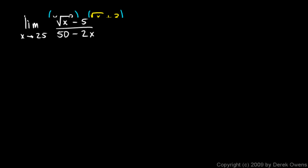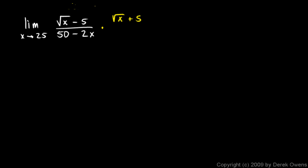Here's another example: the limit as x approaches 25 of the square root of x minus 5 over 50 minus 2x. And once again, we have a 0 over 0. The square root of 25 minus 5 gives us a 0 numerator, and 50 minus 2 times 25 gives us a 0 denominator. So we need to simplify this. We note the radical here, so we'll take the conjugate of the radical expression, which will be the square root of x plus 5, and multiply the top and the bottom by that. Using conjugates to simplify works when your radical expression is in the numerator as well. We'll do a FOIL up top and then multiply the denominator.